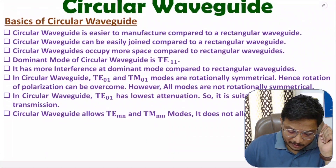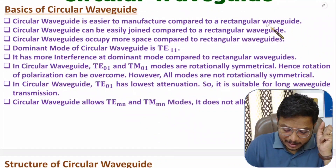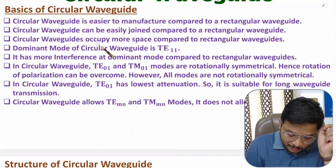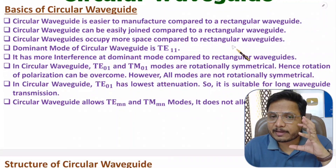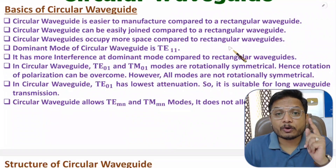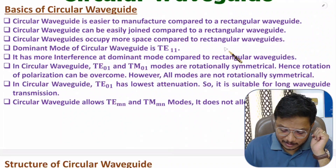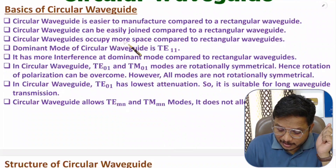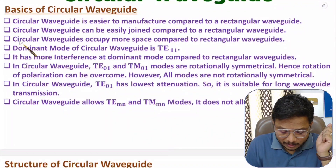With circular waveguide, manufacturing and joining are easier compared to rectangular waveguide. However, there is one issue: circular waveguide occupies more space compared to rectangular waveguide, because of its circular shape. So when space is a constraint, use rectangular waveguide; if there is no space constraint, one can go for circular waveguide.